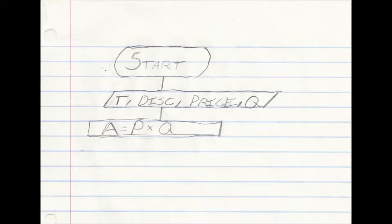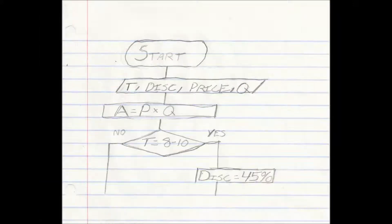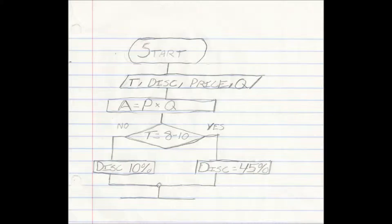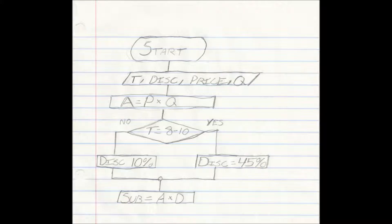This is an input. Process: amount equals price times quantity. Decision: time equals 8 to 10. Discount is 45% if yes. Discount is 10% if no.